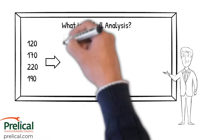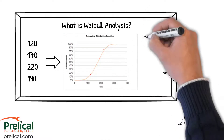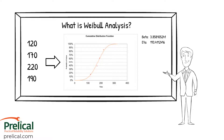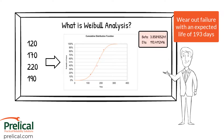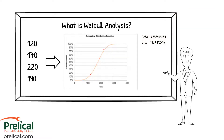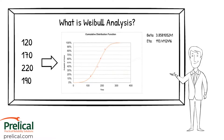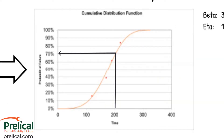Getting back to our example, we had TTF values of 120 days, 170 days, 220, and 190. When we run that through the Weibull analysis, one of the outputs is the cumulative distribution function, where you have time on the x-axis and probability of failure on the y-axis. You can see how the distribution works — for example, if you came over to 200 days, you would see a probability of failure of right around 70%.